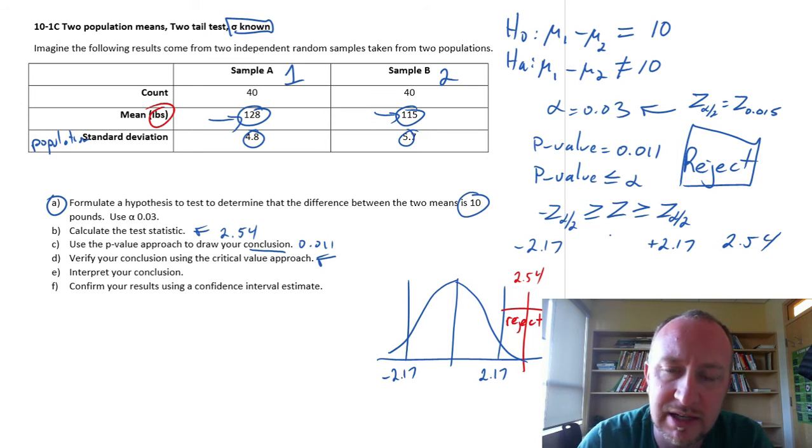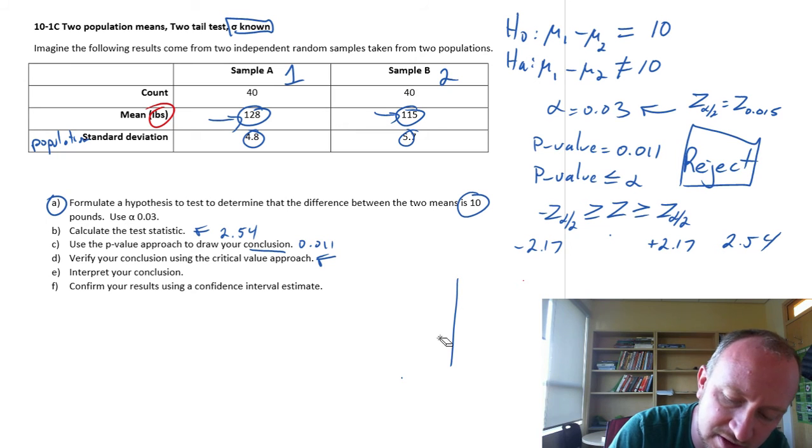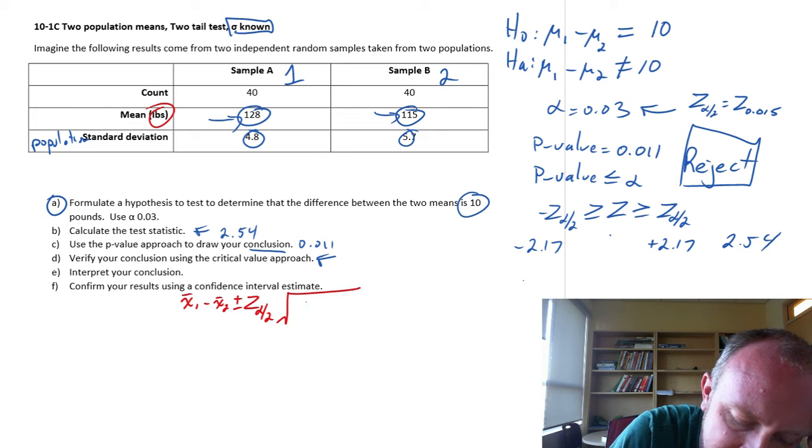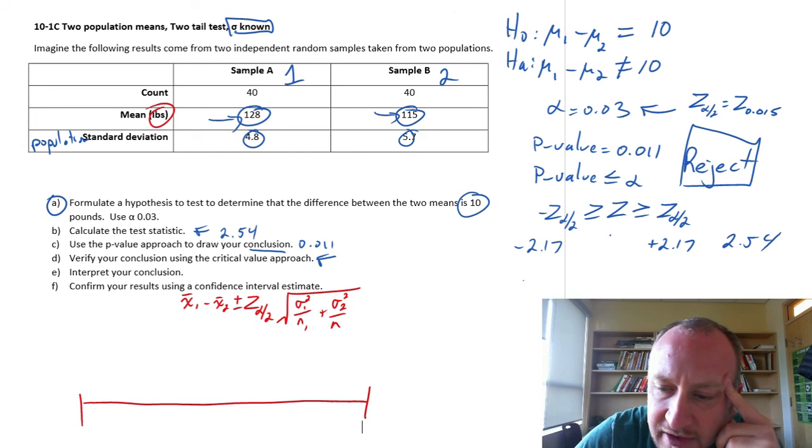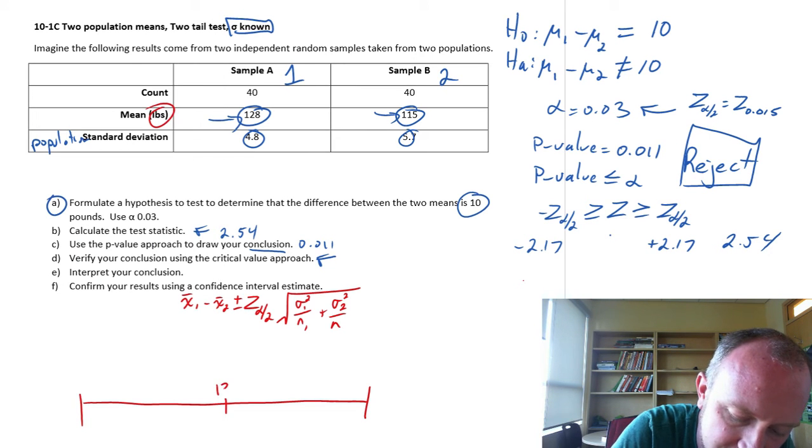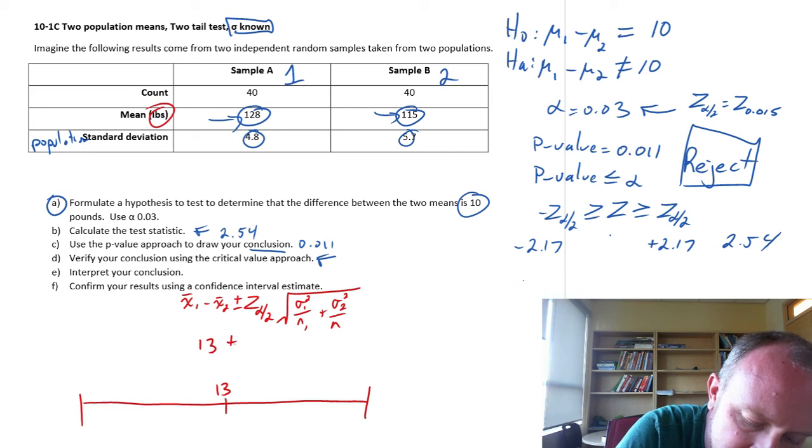Because we're doing a two-tail test, we can confirm our results with a confidence interval estimate. So let's do that. The formula here is going to be the same. It's that point estimate plus or minus the critical value times the standard error. All of these things we've already calculated and looked up. And that will give us the lower and upper limits for this interval estimate. So let me just get that point estimate, 128 minus 115. So that's 13 as our point estimate.